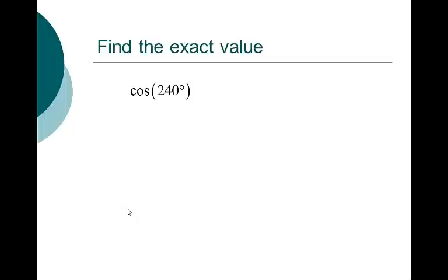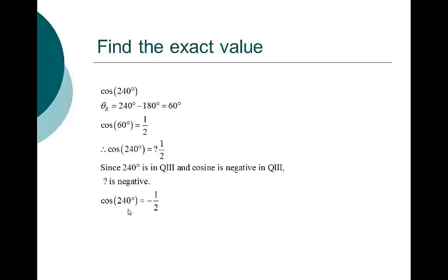How about the cosine of 240 degrees? I want to figure out the reference angle, find the cosine of that, then worry about positive or negative. 240 minus 180 is 60 — this is the 60-degree angle in quadrant 3. The cosine of 60 is 1/2. Since 240 is in quadrant 3 and cosine is negative there, the cosine of 240 is negative 1/2.